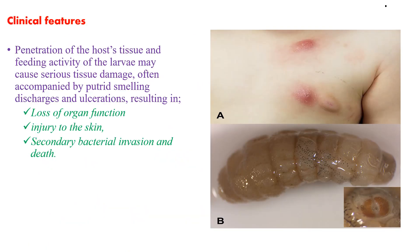When we see the clinical features, penetration of the host tissue and the feeding activity of larvae might cause serious tissue damage, often accompanied by putrid-smelling discharge and ulceration, which results in loss of organ function, injury to the skin, or secondary bacterial invasion, and death.